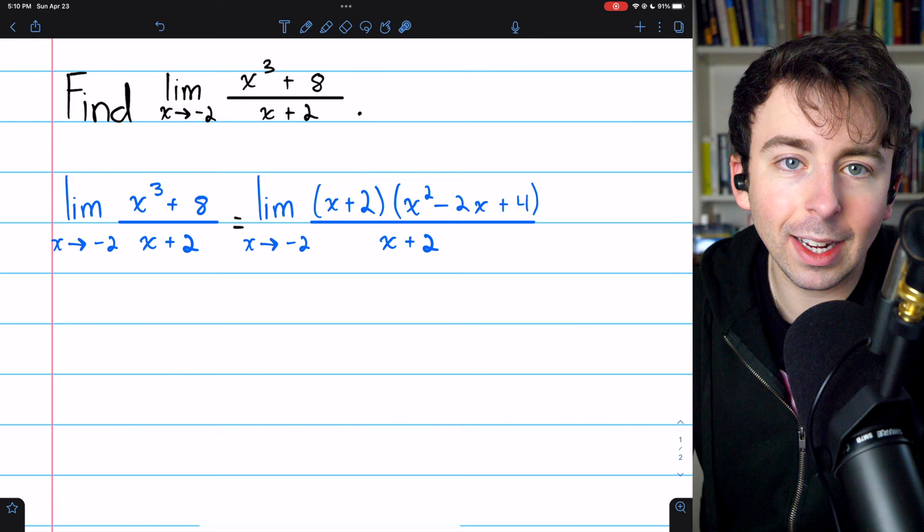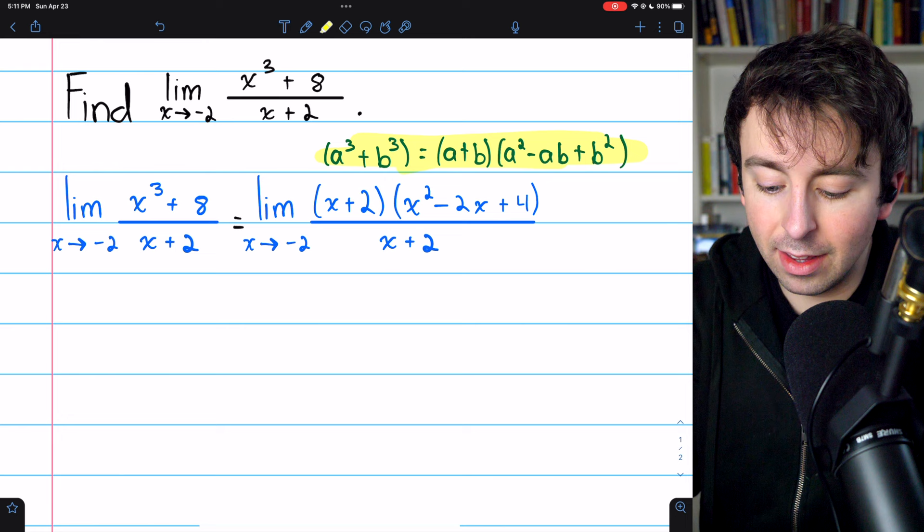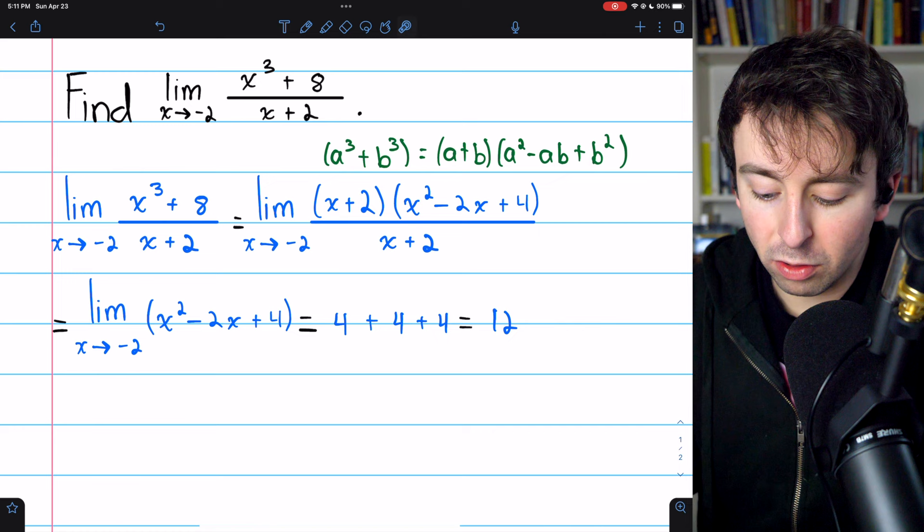Here is that factorization written out for your reference. It's worth memorizing. So now we can do the cancellation I described a moment ago, and that's just going to leave x squared minus two x plus four.